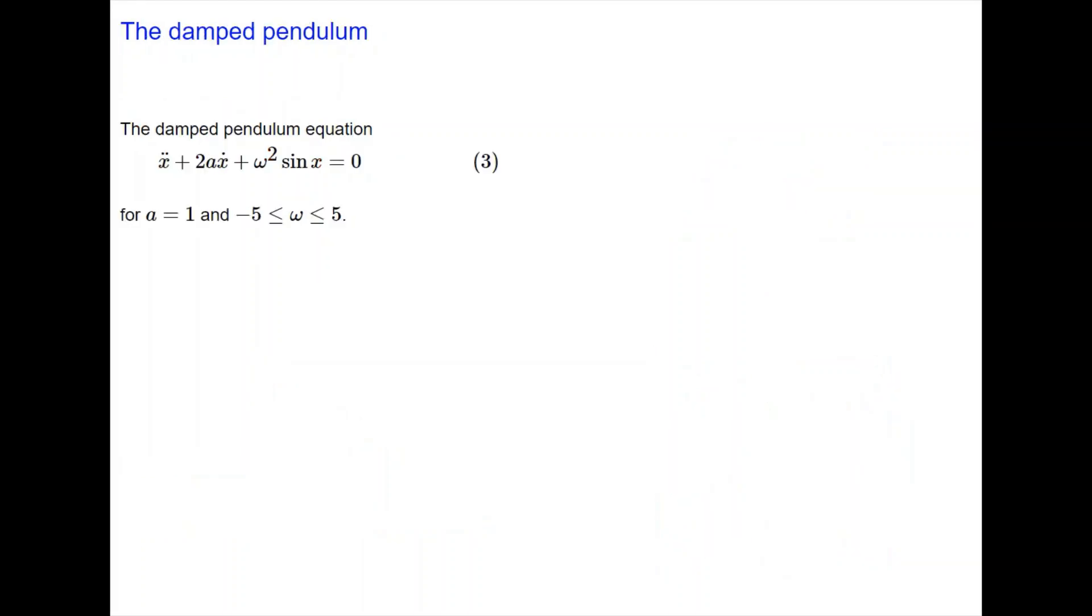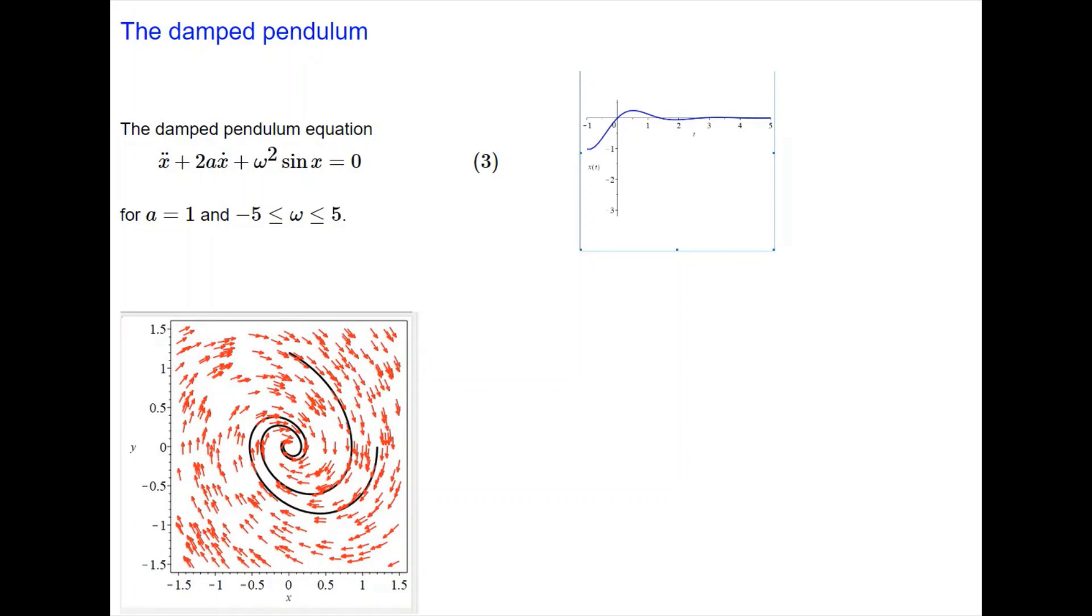And now we are considering the damped system in which there is a factor of 2a·ẋ that ensures damping. We are running the show with a = 1 and ω acquiring the values between -5 and 5. This is the phase portrait of the system and the corresponding dynamical system dx/dt = y and dy/dt = -2dx/dt - ω² sin x. You can easily verify that it satisfies the system.